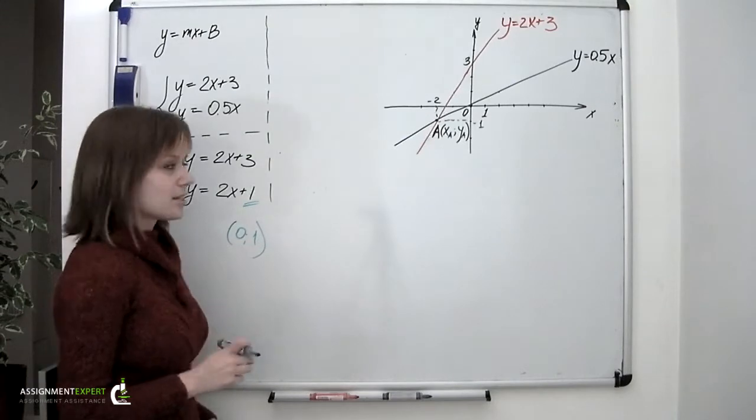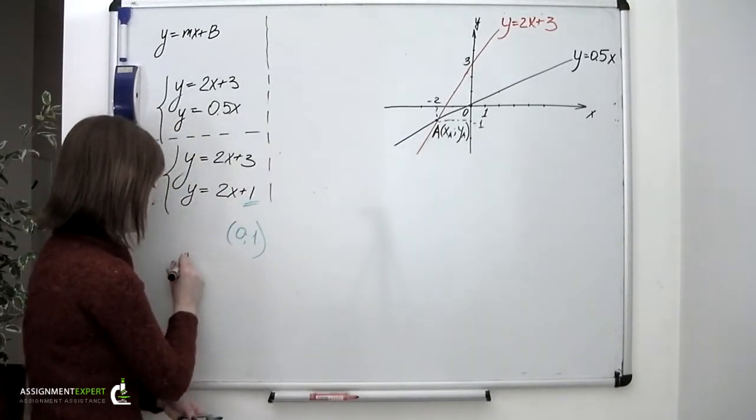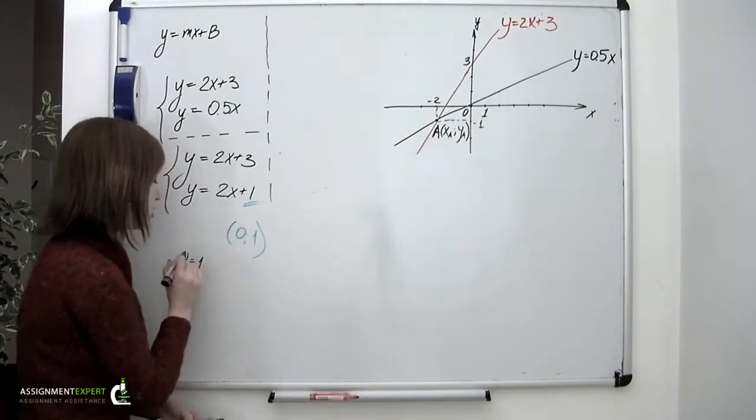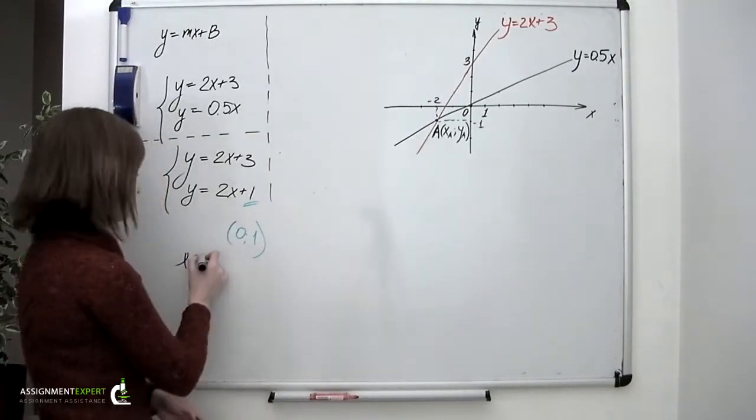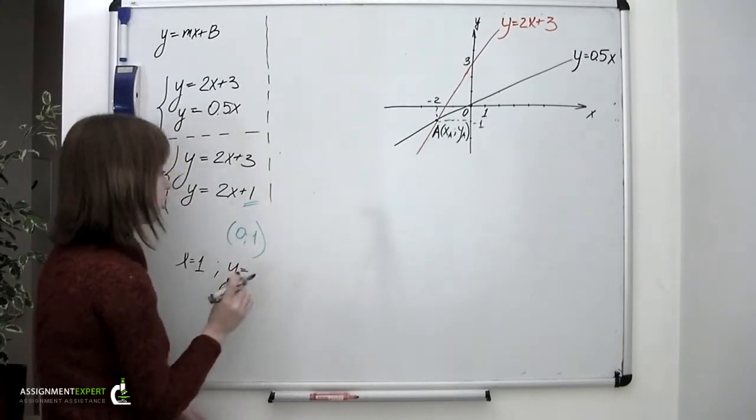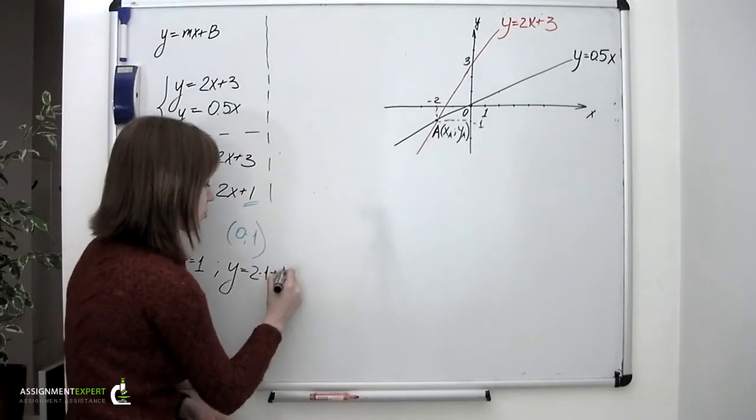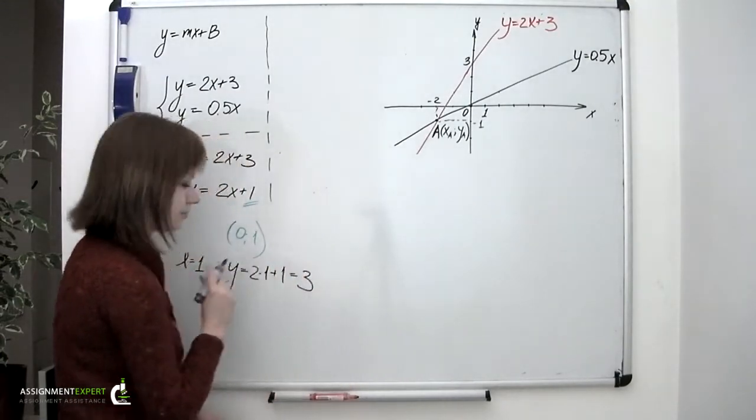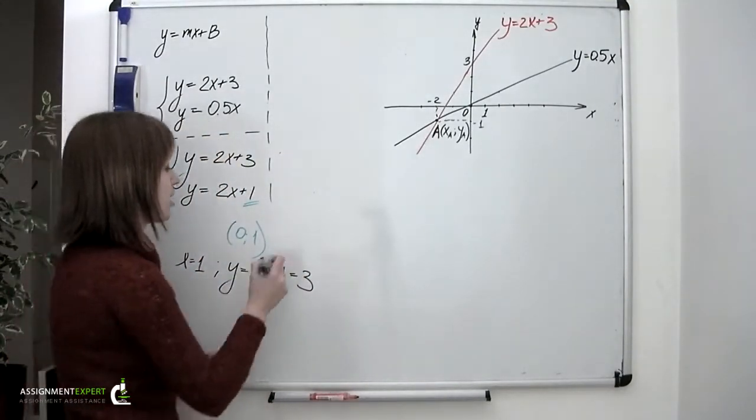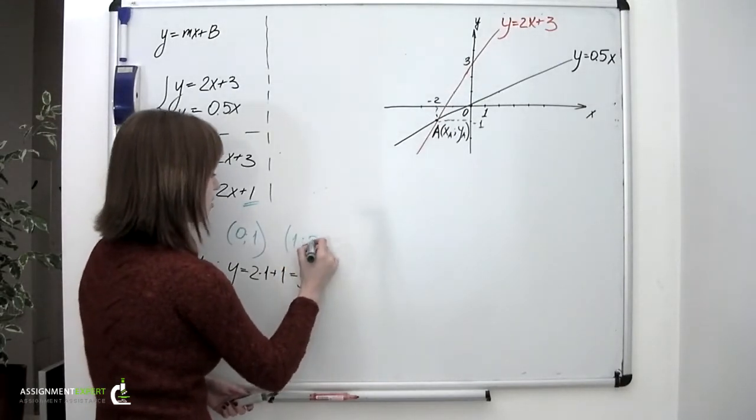Now we're going to need another point. We're setting x to the value of 1, but we could have picked any other value. And then define y according to the equation. So we have 2 times 1 plus 1, which yields 3. So we now have the second point with coordinates 1 and 3.